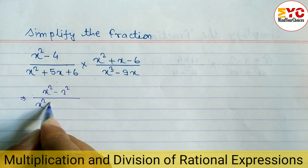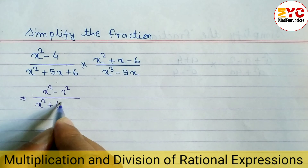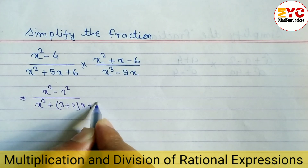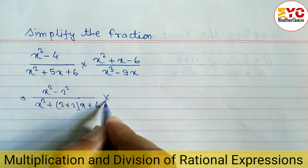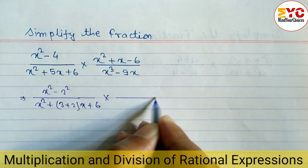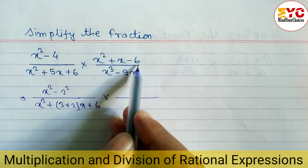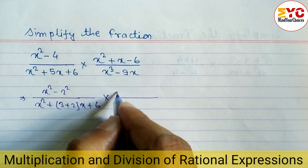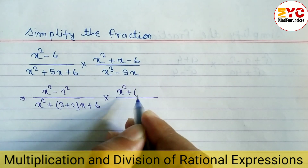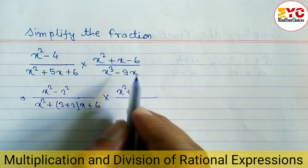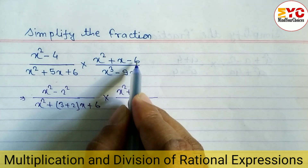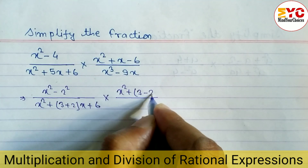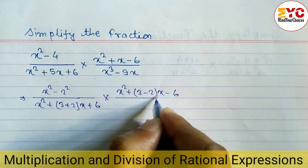So we can write x squared plus, in the place of 5x we write 3x plus 2x, plus 6. Similarly, for the next expression we have to find factors whose multiplication is 6 and subtraction is 1 — the factors are 3 and 2 — so we write 3 minus 2 equals 1 and 3 times 2 equals 6. We write 3x minus 2x minus 6.